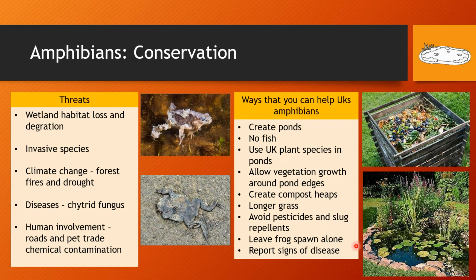Another way is to leave any frogspawn you find in a pond alone — don't even try to relocate it. And another key way is to report any signs of disease. If you see individuals that look like they may be infected by chytrid fungus, or if your local pond is seeing an increase in amphibian deaths, report it so it can be investigated, infected individuals can be isolated, and the spread of chytrid fungus and other diseases can be stopped.